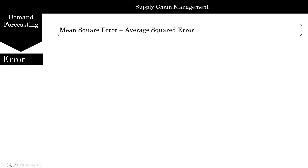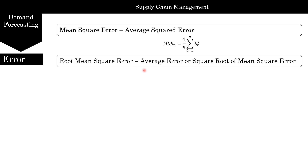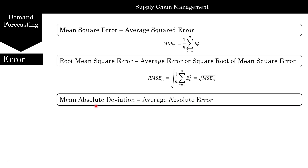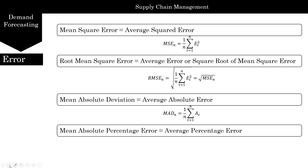Your error terms: mean squared error (MSE) is your average squared error — you take your error term, square it, sum all the squared errors, and divide by the number of values. Root mean squared error (RMSE) is the square root of MSE. Mean absolute deviation (MAD) is your average absolute error — you take the absolute errors, sum them all up, and take the average. Mean absolute percentage error (MAPE) is the average percent error — for each error term you divide by your actual demand, take the absolute value, sum all of it, and divide by the number of values.